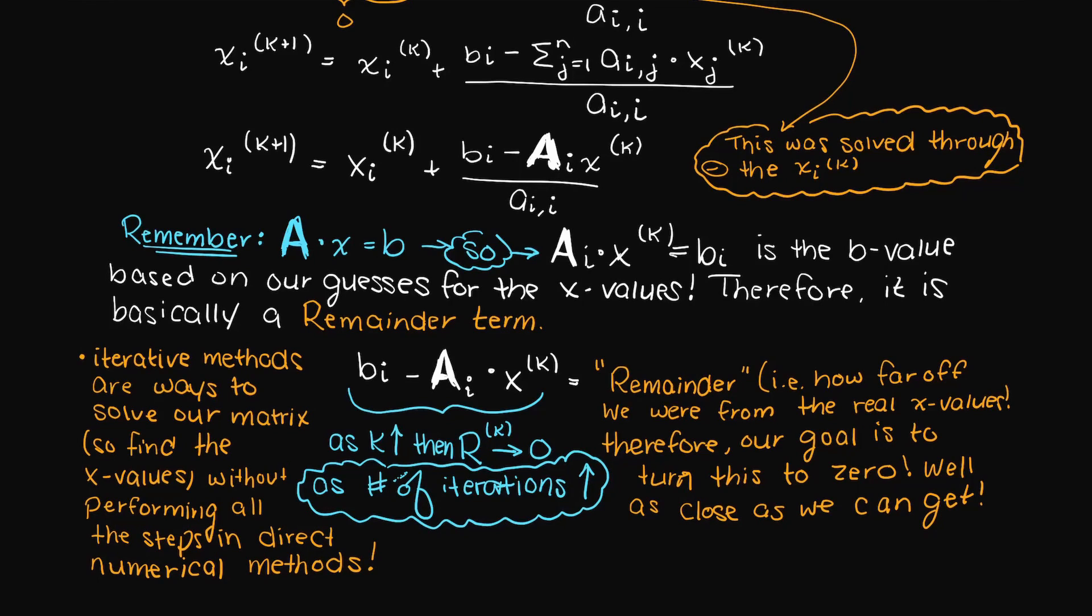Now I still haven't covered exactly how we are going to be turning this remainder term into 0, however that will be covered in future videos. I just wanted to finish off by saying why this is important. Why did we go through all these steps above? What was the point?